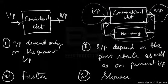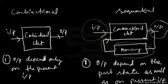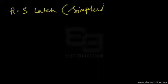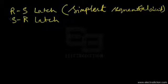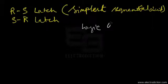Combinational circuits are also easier to design as the design process is straightforward. Sequential circuits are more complicated to design. That sums up the basic differences. Now moving into the details of the RS latch — the RS latch is the simplest sequential circuit ever made, and is also referred to as the SR latch.